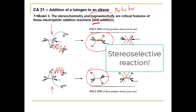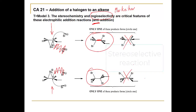Specifically, we refer to this as an anti-addition, or we say it has anti-stereochemistry. Before leaving this point, the two products that form are mirror images of each other — so in this particular case, the two stereoisomers that form are enantiomers.